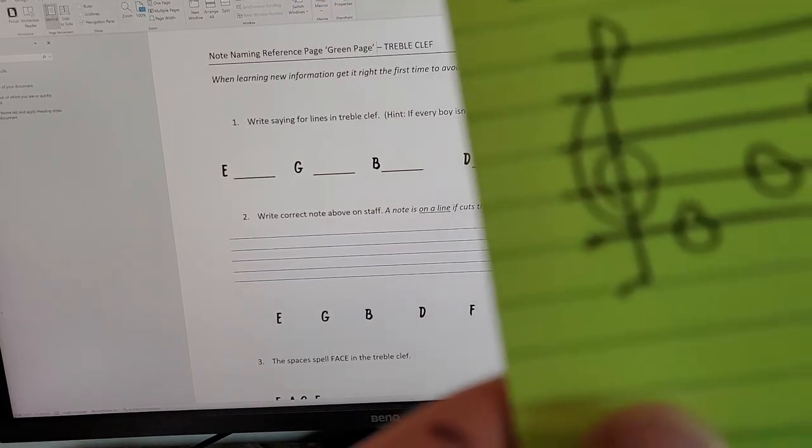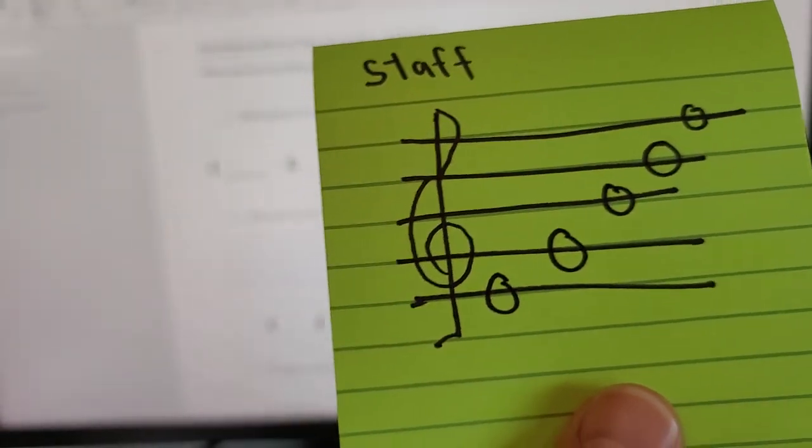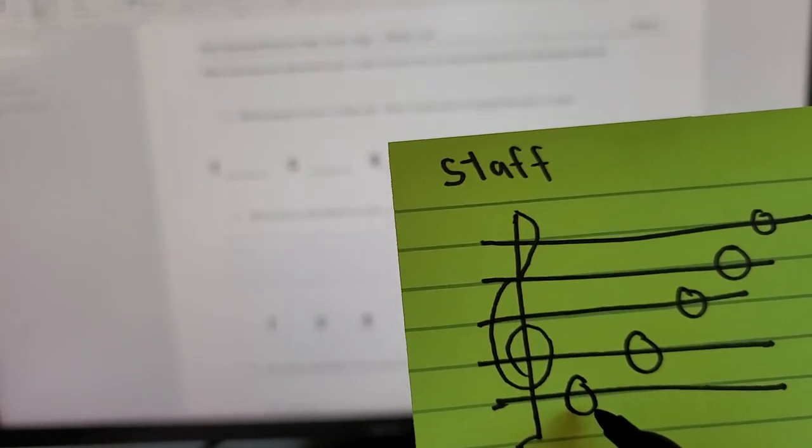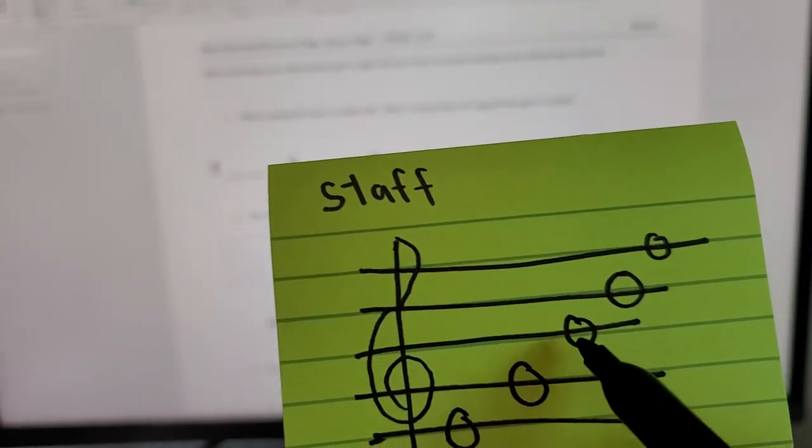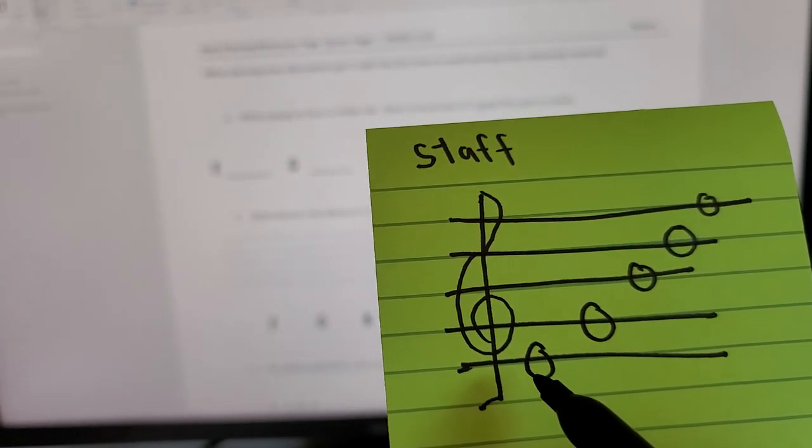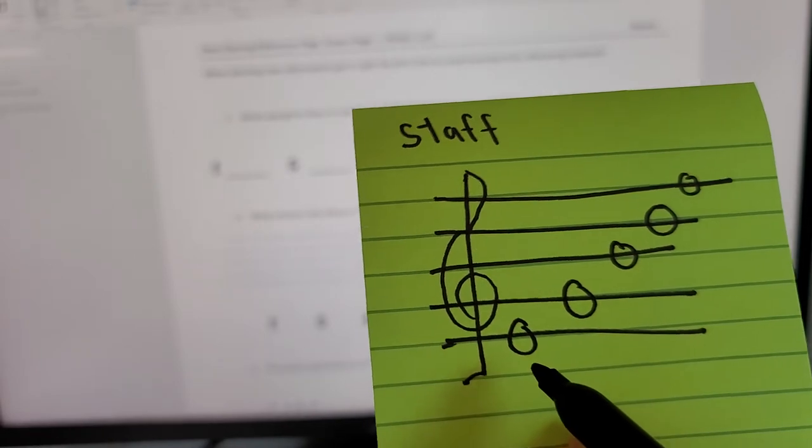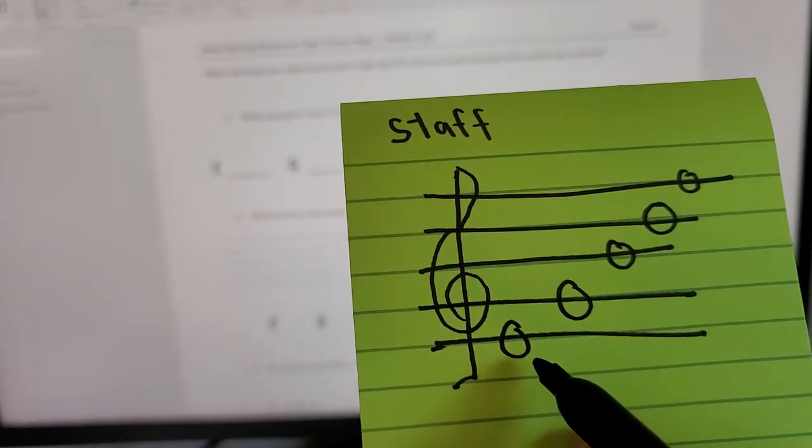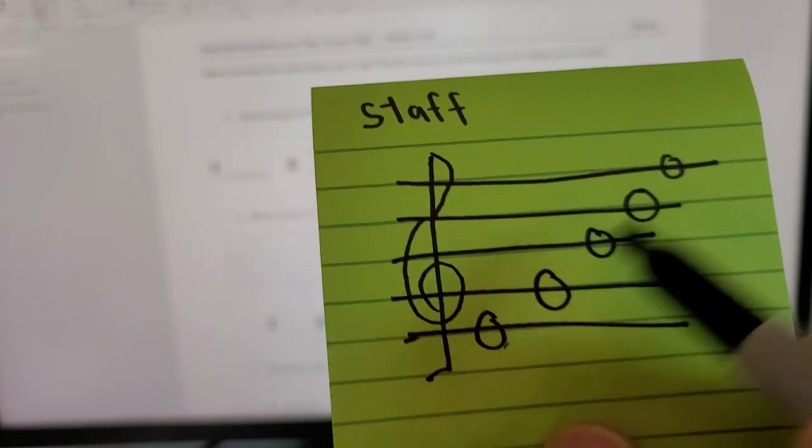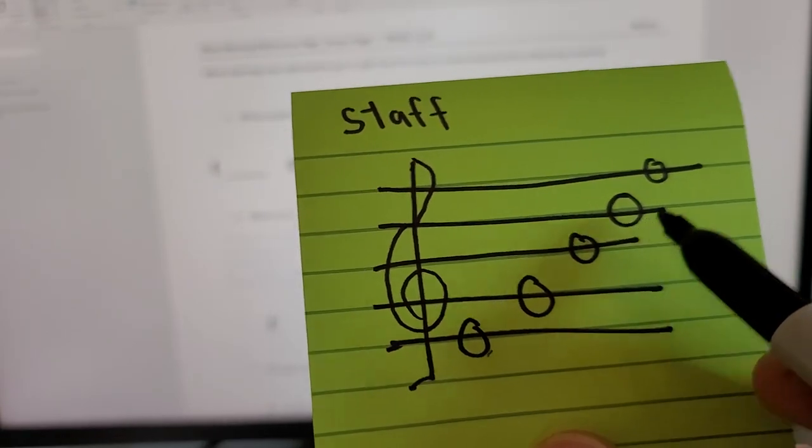So I'm actually going to ask you to draw this out on your paper, or draw this out on paper if you can. And each of these lines cut that circle in half. When you do that, these notes are called on a line. We've talked about this before. So hopefully that's ringing a bell. E, G, B, D, F. Every Good Boy Deserves Fudge.